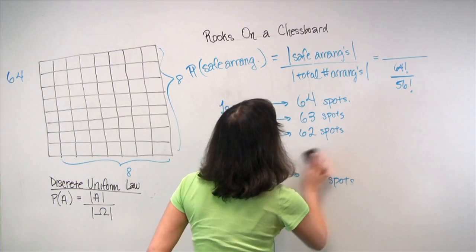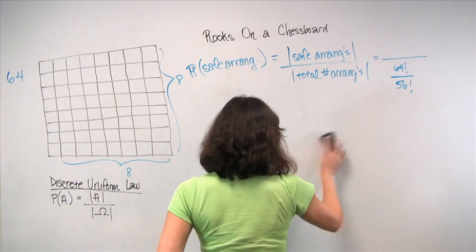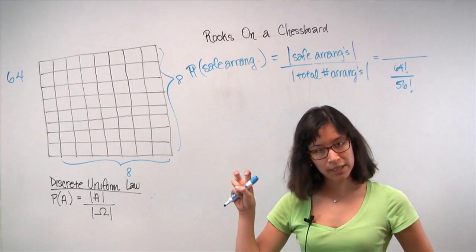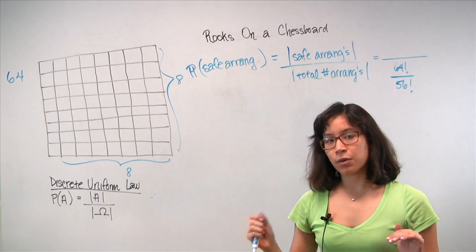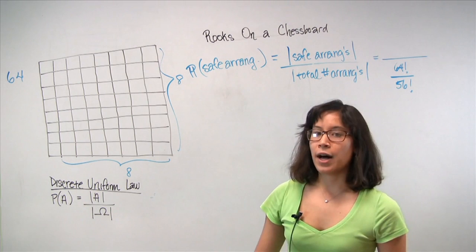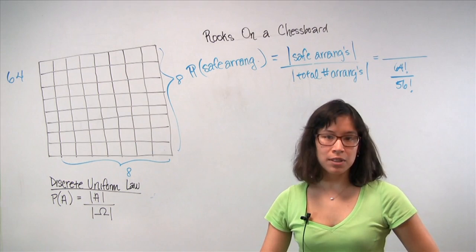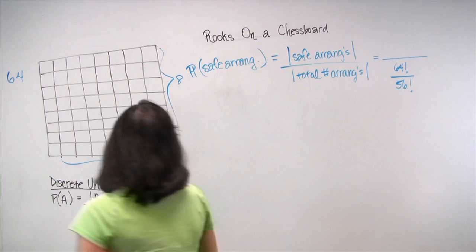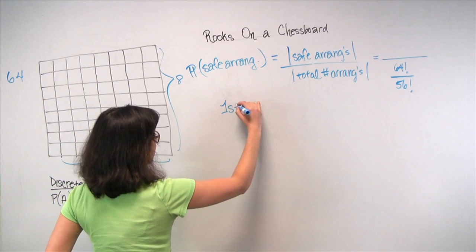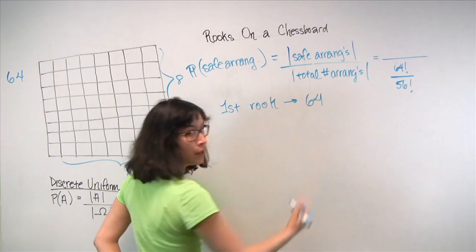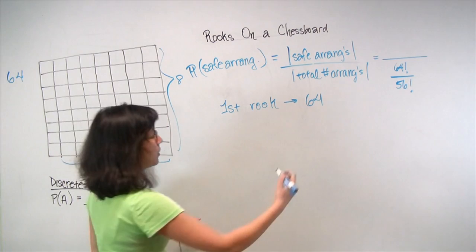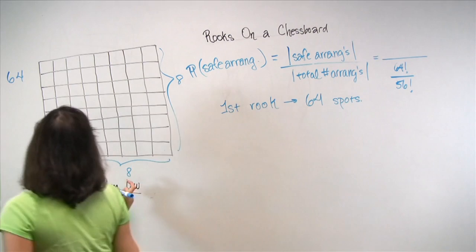I would like to start with computing the denominator, the total number of arrangements. We have eight Rooks and we need to place all of them. We have an eight by eight board, so the total number of squares is 64. I like to approach problems sequentially. Imagine a sequential process during which we place each Rook one at a time. How many squares can you place that first Rook in? You can place it in 64 spots.